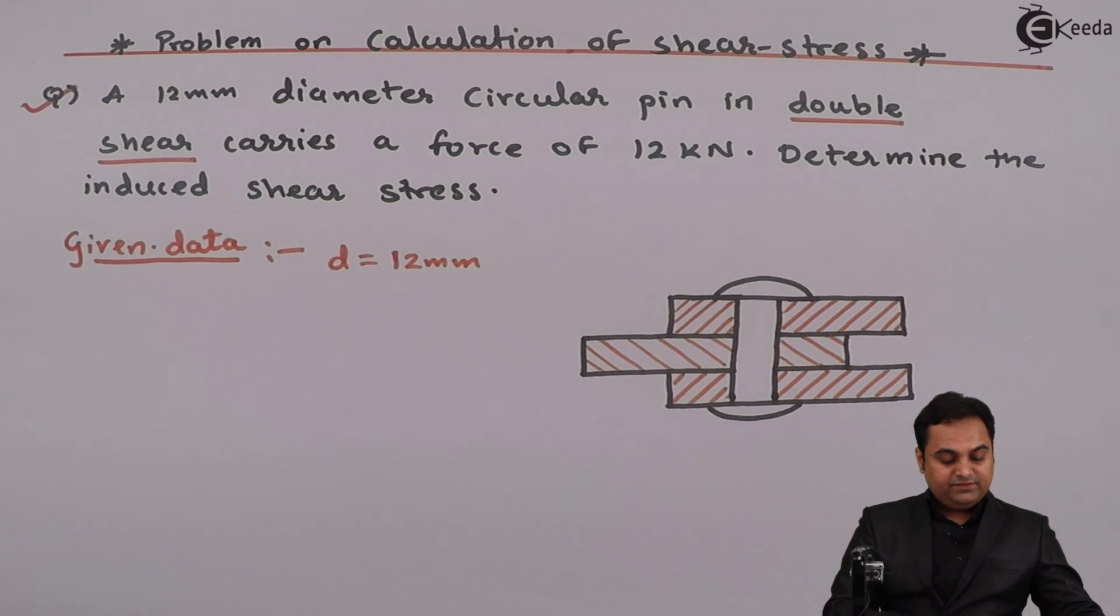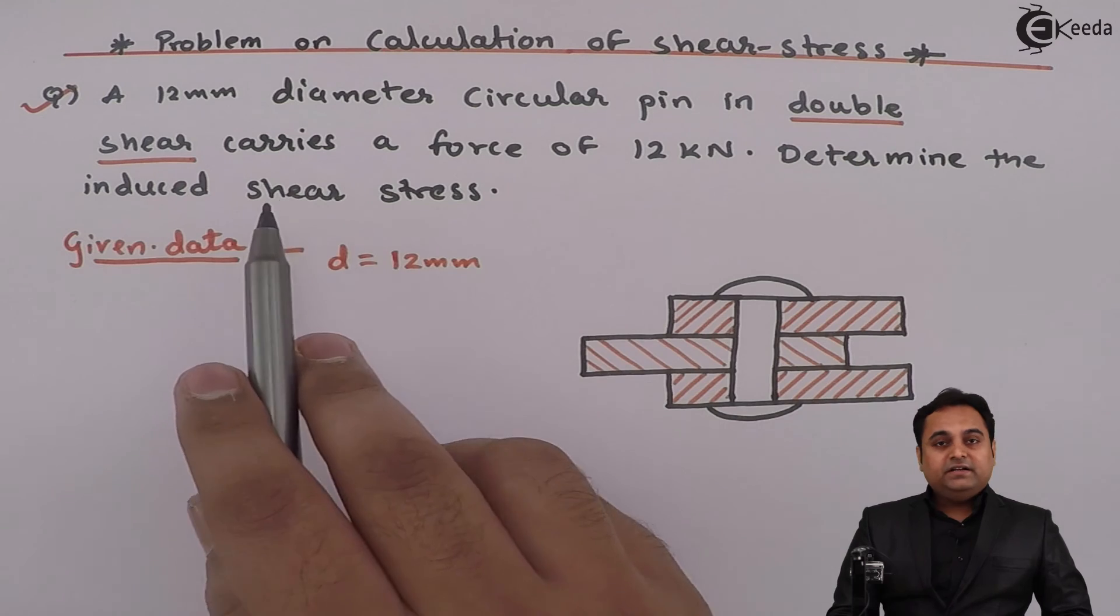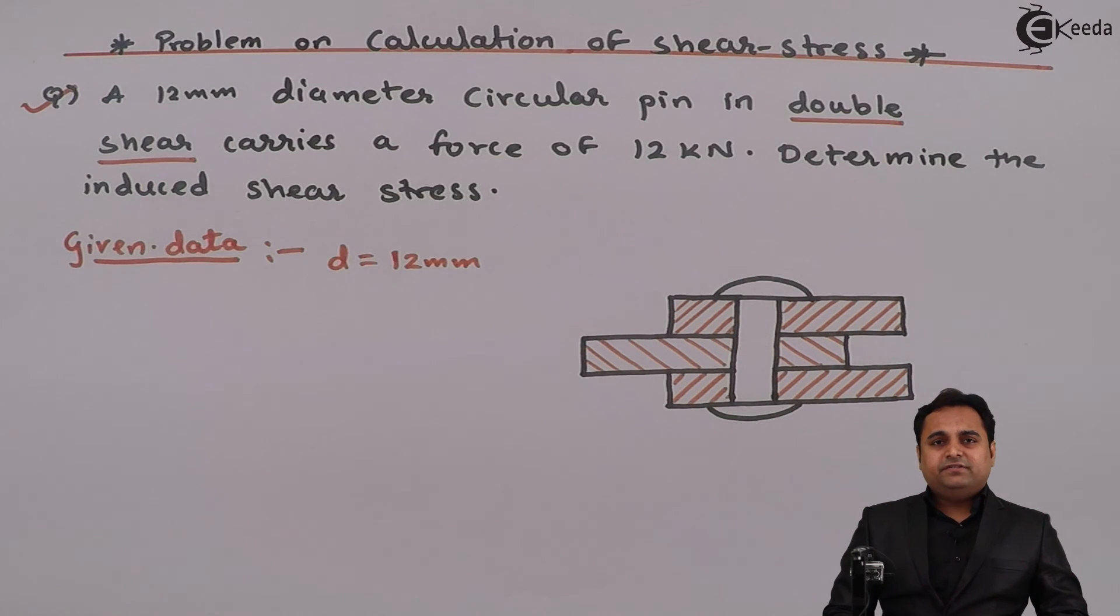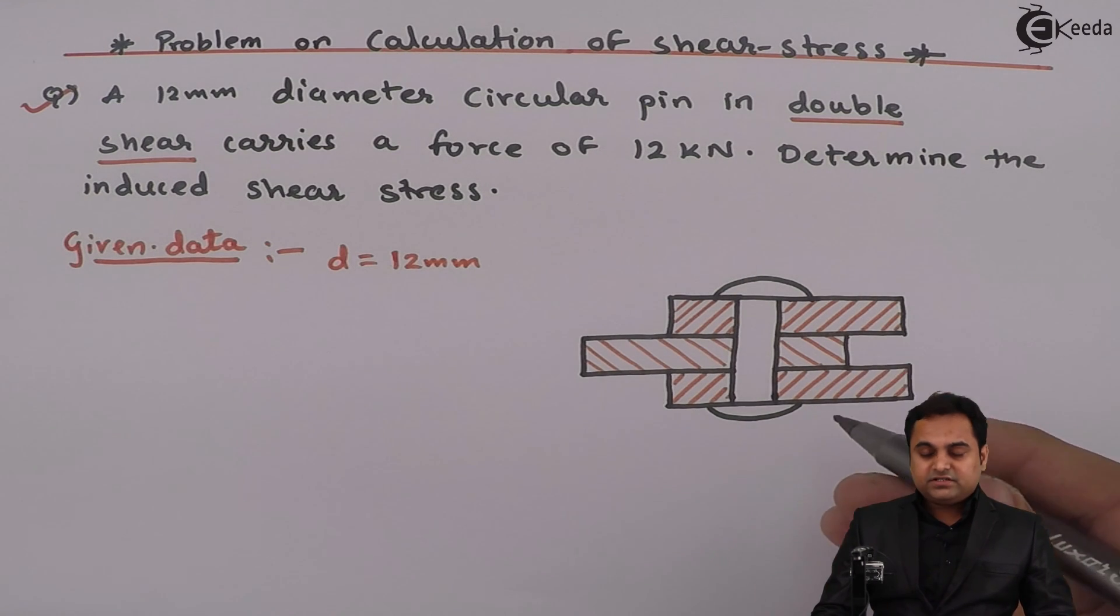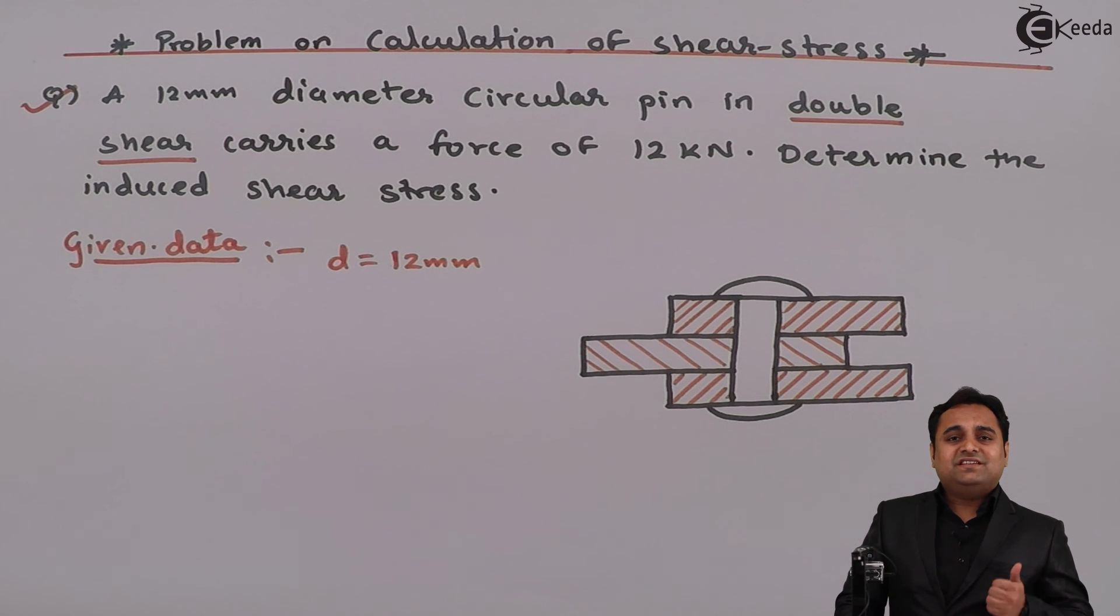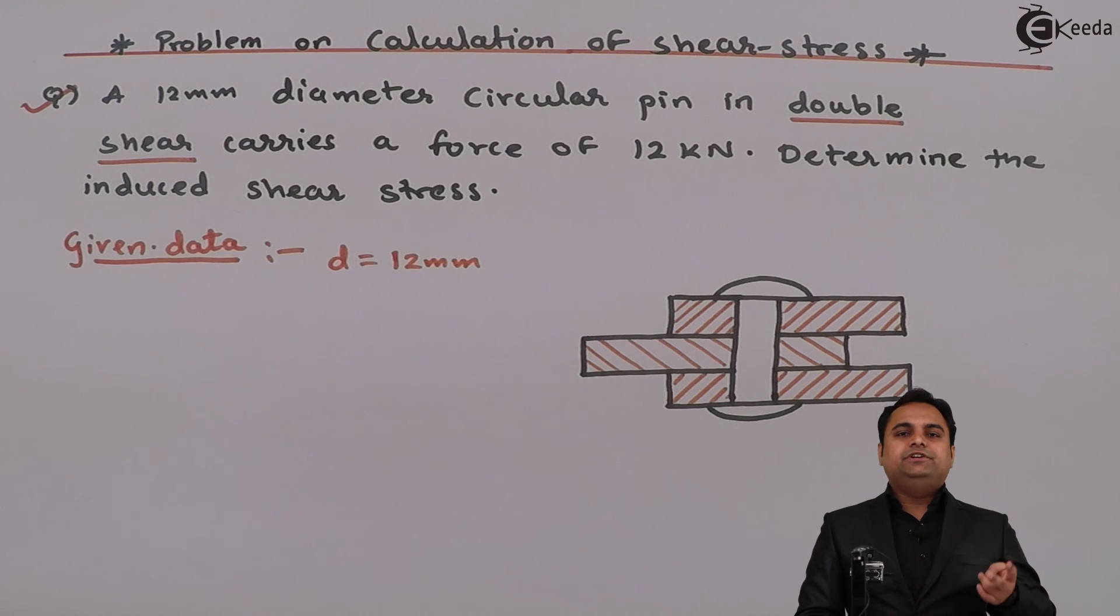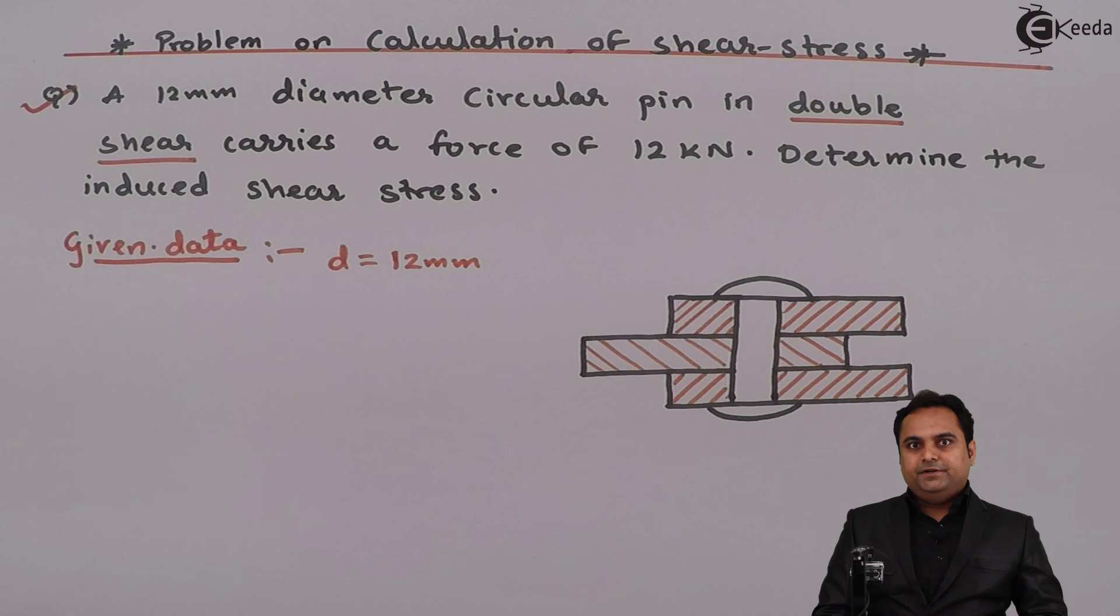Since it is given that the pin is in double shear, that is why we have three plates connected. If it was single shear, then it would have been only two plates which were connected.